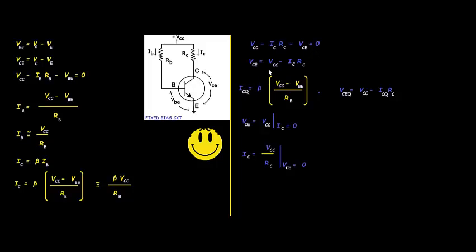Now I need to find the Q-point (quiescent point). The equation for the collector current Q-point is: ICQ equals beta times (VCC minus VBE) divided by RB. For the collector to emitter voltage Q-point: VCEQ equals VCC minus ICQ·RC.